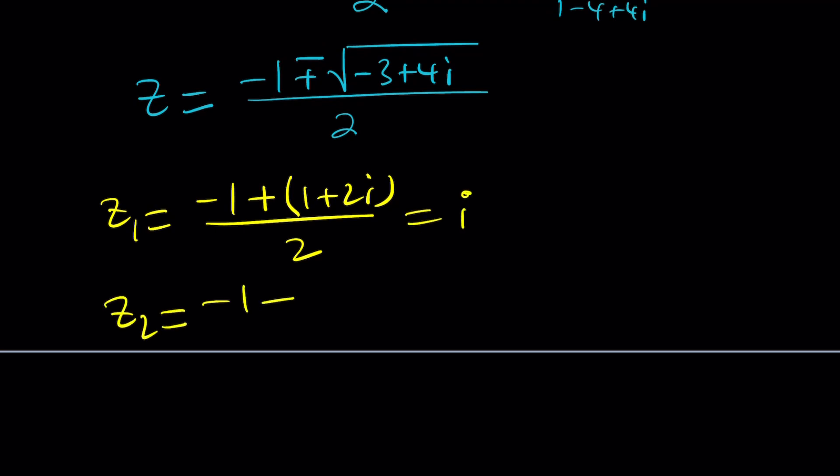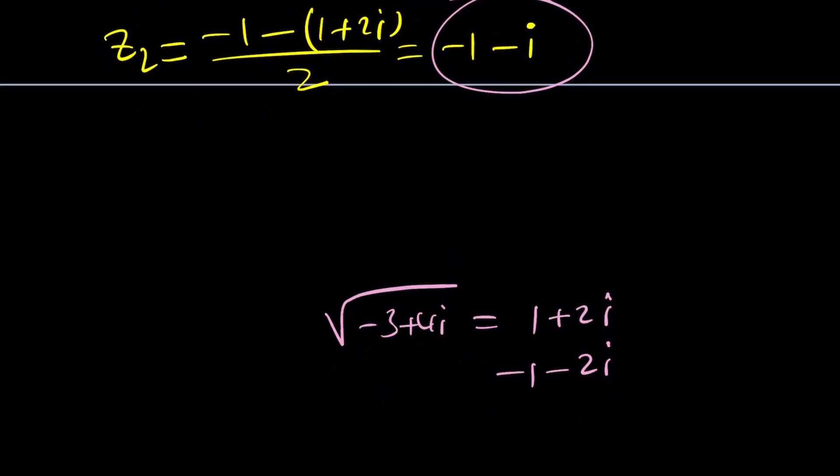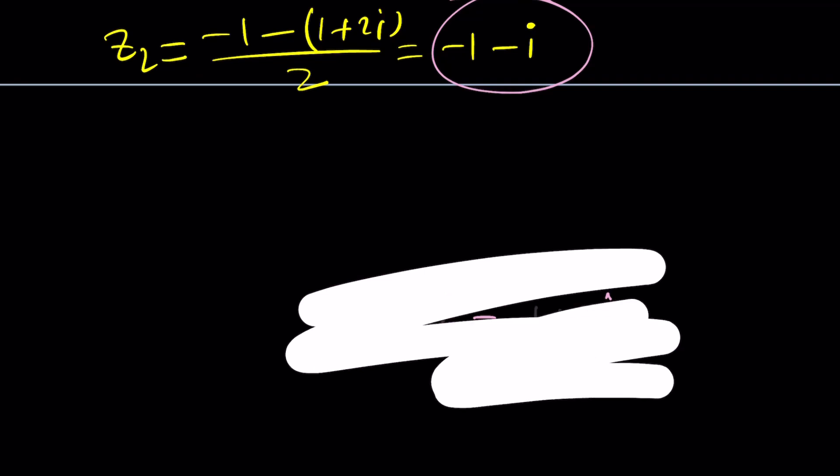And z sub 2 is going to be negative 1 minus 1 plus 2i over 2, but this is just going to give you negative 2 minus 2i, and negative 1 minus i is going to be another solution. But guess what? We need, we should, we need to check for extraneous solutions. Let's go ahead and do it, and now we're going to look at the results from WolframAlpha. Okay?